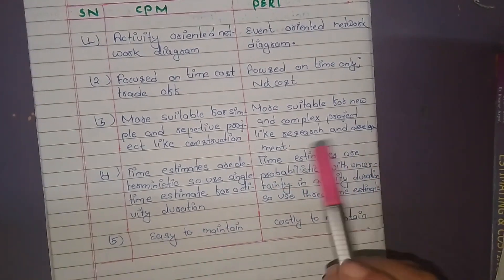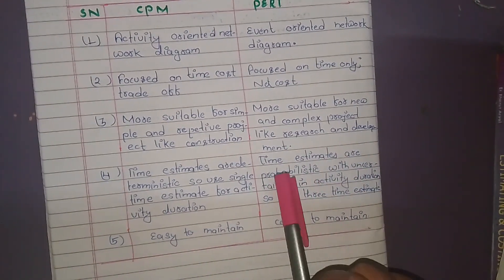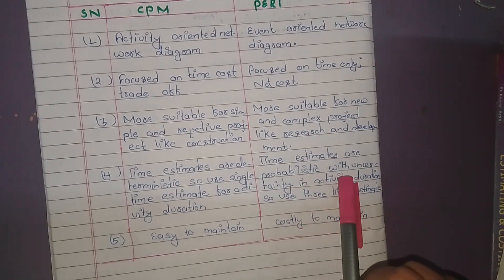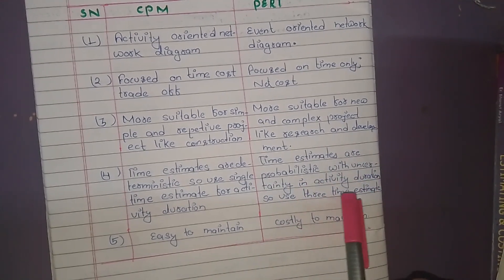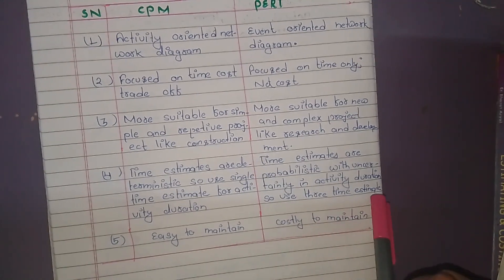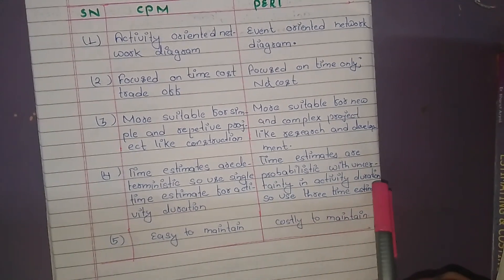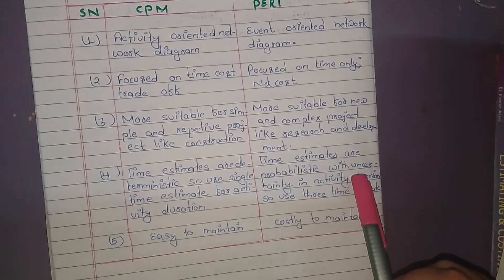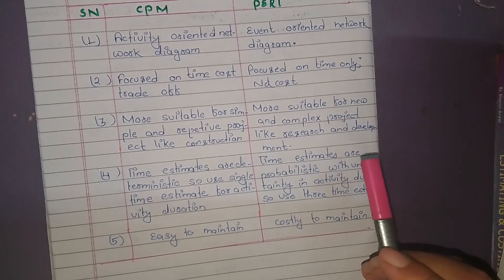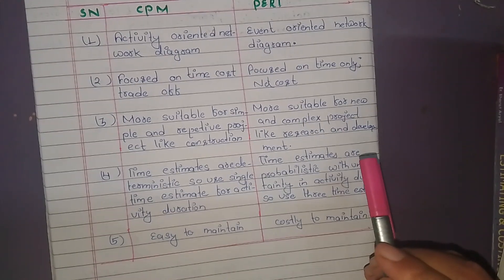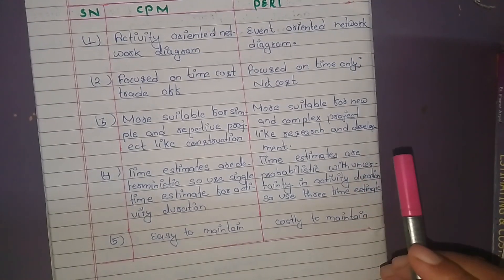In PERT, Time Estimates are Probabilistic with Uncertainty in Activity Duration, so 3 Time Estimates are used. Those 3 Time Estimates are: 1) Optimistic Time Estimate, 2) Pessimistic Time Estimate, and 3) Most Likely or Probable Time Estimate.